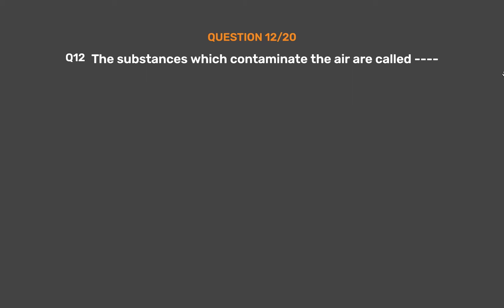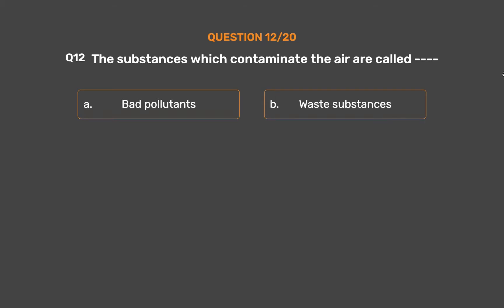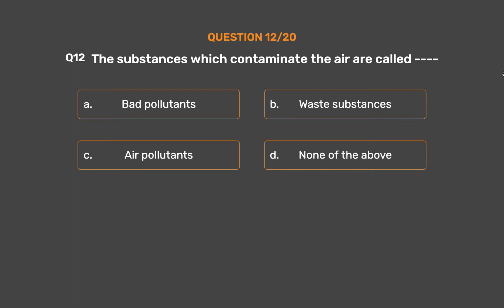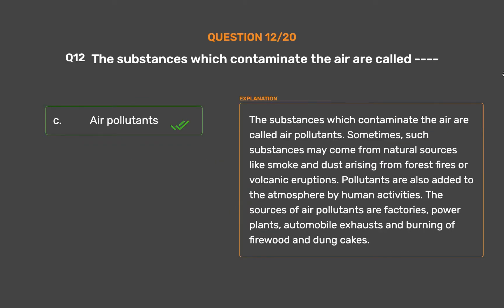Question number 12: The substances which contaminate the air are called — Option A: Bad pollutants. Option B: Waste substances. Option C: Air pollutants. Option D: None of the above. The correct answer is Option C: Air pollutants. The substances which contaminate the air are called air pollutants. Sometimes such substances may come from natural sources like smoke and dust arising from forest fires or volcanic eruptions. Pollutants are also added to the atmosphere by human activities. The sources of air pollutants are factories, power plants, automobile exhausts and burning of firewood and dung cakes.